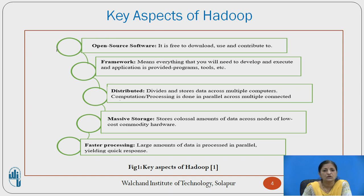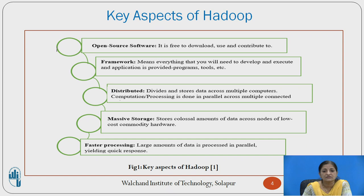In short, it provides everything to the user to develop and execute applications as per their needs. It is a distributed architecture — it divides and stores data on multiple computers, and processes the data with the help of multiple computers. It provides massive storage of data because we are using clusters of computers. It uses large amounts of commodity hardware to process data in parallel, so users can be given quick response as all tasks are processed in parallel.